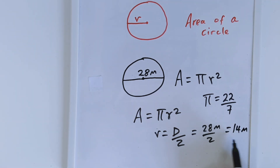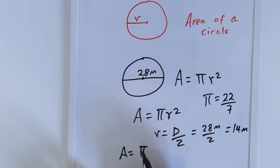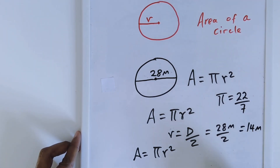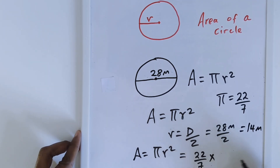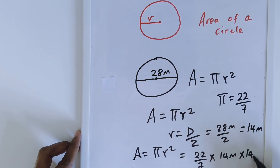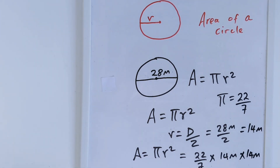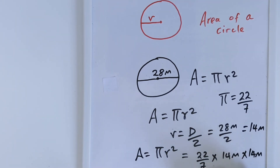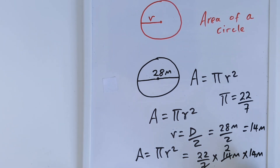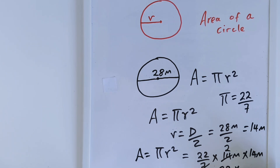Once you have the radius, you plug it into the formula. The area of this circle is equal to pi r squared, where pi is 22 over 7. The radius is 14 m, and because it is squared, you have to multiply r by itself. Simplifying: 7 goes into 14 twice, so you get 22 times 28.